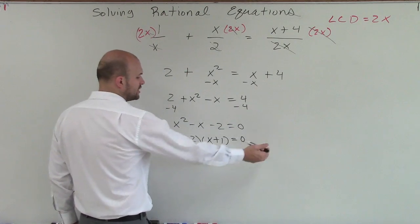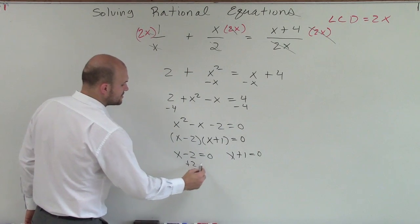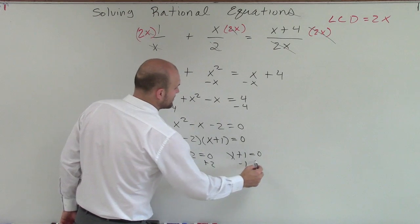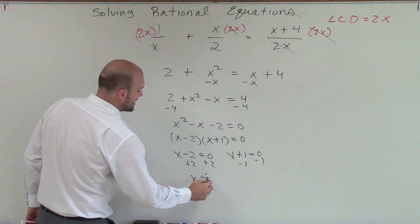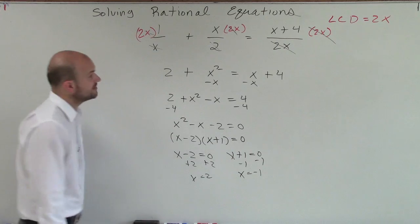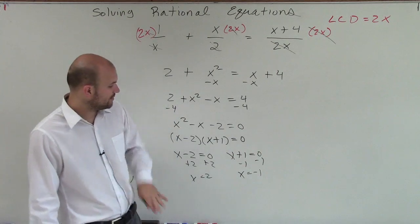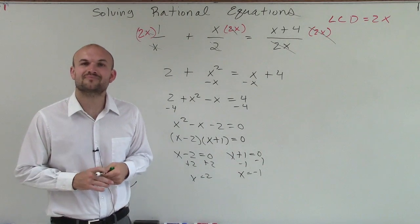And now what I've done is I've created two linear equations that equal 0. So now I can simply use my inverse operations to solve. So x equals 2 and x equals negative 1. So therefore, this rational expression, or rational equation, has two solutions. Thanks.